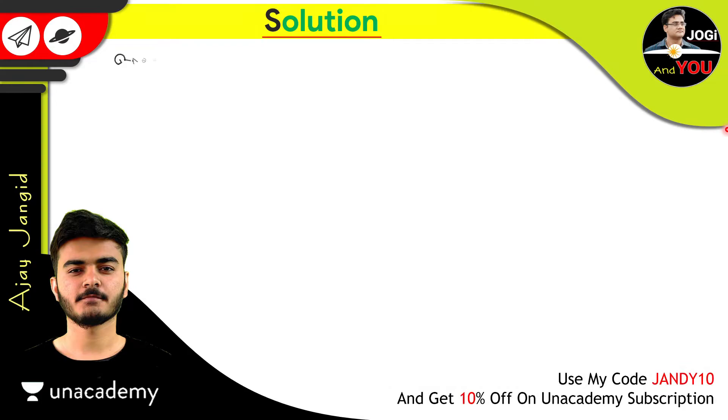Here is our given AP which is 9, 17, 25, dot dot dot. So let the sum of n terms be 636, that means S_n is equal to 636. These all are the given things from the question.